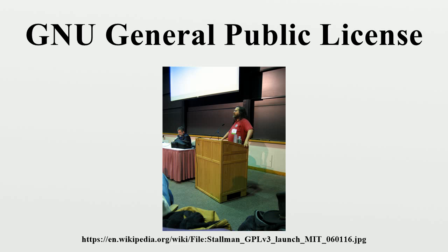The GPL was written by Richard Stallman in 1989, for use with programs released as part of the GNU project. The original GPL was based on a unification of similar licenses used for early versions of GNU Emacs, the GNU debugger, and the GNU C compiler. These licenses contained similar provisions to the modern GPL, but were specific to each program, rendering them incompatible despite being essentially the same license. Stallman's goal was to produce one license that could be used for any project, thus making it possible for many projects to share code.